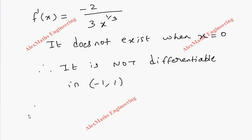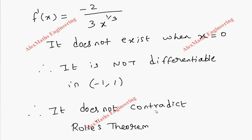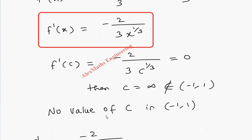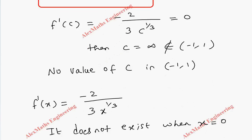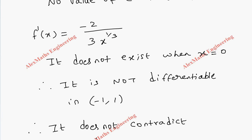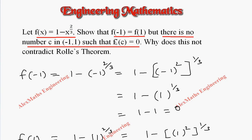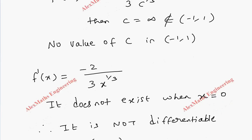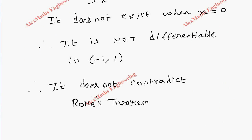Therefore, it does not contradict Rolle's theorem. Because when there is no value of c in the given interval, it would have to contradict Rolle's theorem. But the function is already not differentiable. So it does not contradict Rolle's theorem. As per the question, f of x is given, we prove the first part, and when we try to find c in this interval we are not able to find it. So it does not satisfy Rolle's theorem. But since the function itself is not differentiable in the given interval minus 1 comma 1, hence it does not contradict Rolle's theorem.